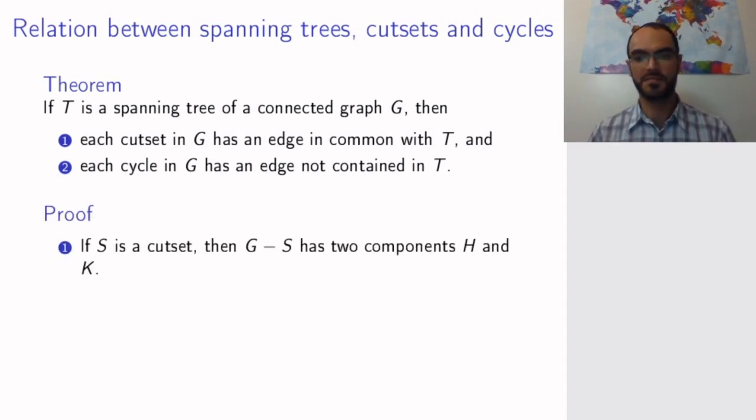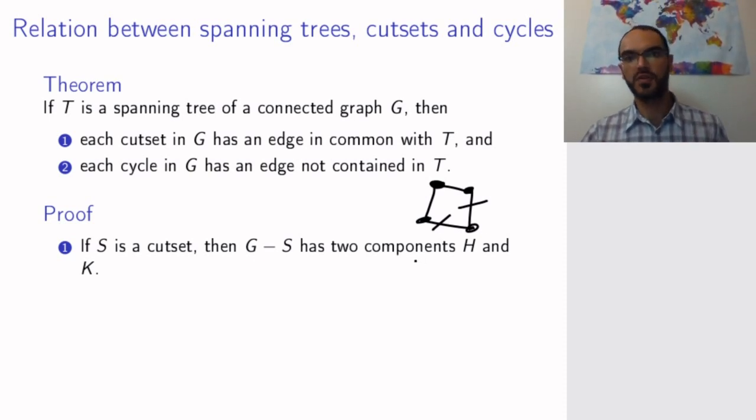So why is that? Let's start with the cutsets. So if we have a graph G, say this graph G, and if I take a cutset of G, for example, I remove these two vertices, then the new graph will have exactly two components. It will be disconnected because a cutset is disconnecting, and it will not have more than two components because a cutset is minimal. We have talked about this. So the graph G minus S, where S is the cutset, will have exactly two components.